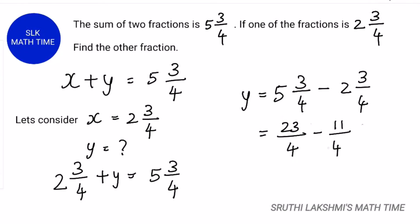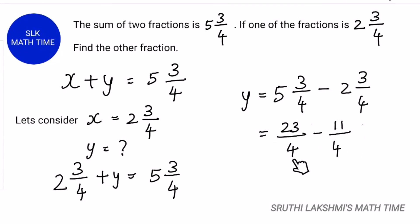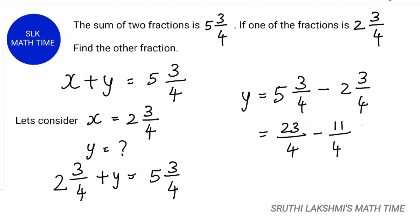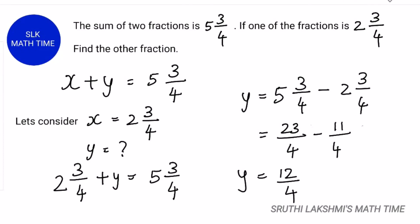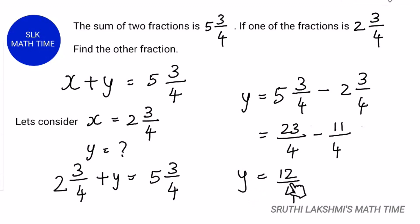So 23 by 4 minus 11 by 4. Since both these fractions have the same denominators, we just subtract the numerators. So when we subtract the numerators, we get 23 minus 11. So 23 minus 11 is 12 by 4. So y is 12 by 4.